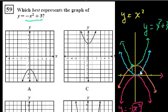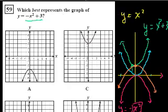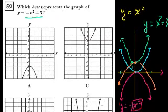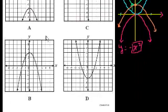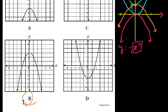So out of all the choices they gave us, it should be opening downward and it should have its y-intercept at y equals 3 — because if you put x equals 0, y equals 3. So we need opening downwards. These two are the only ones opening downwards, and the y-intercept should be at 3 because we shifted it up by 3. So the answer is choice B.